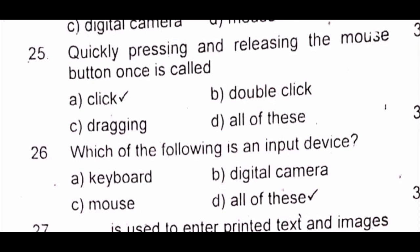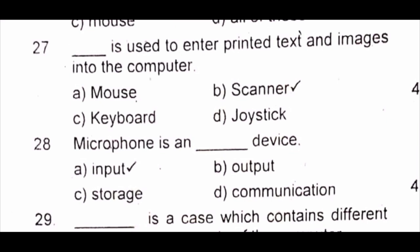Question 26: Which of the following is an input device? A) keyboard B) digital camera C) mouse D) all of these. The answer is D) all of these. Question 27: Dash is used to enter printed text and images into the computer. A) mouse B) scanner C) keyboard D) joystick. The answer is B) scanner.